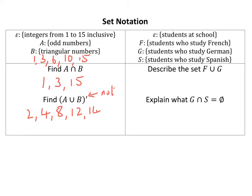On this second one, students at school, students who study French, students who study German, students who study Spanish. Describe the set F union G - students who study French or German or both.